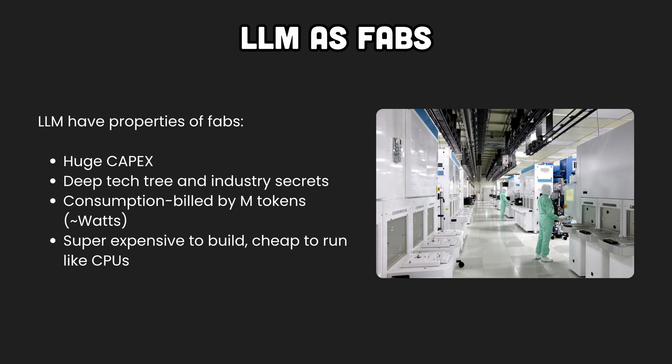The second comparison is LLMs as fabs — semiconductor manufacturing plants. Like fabs, they require huge CAPEX and involve a deep and rapidly growing tech tree with industrial secrets. Have you seen how OpenAI stopped being open and kept their techniques as secret as the Coca-Cola recipe? Similar to fabs, the output — the LLM model — is cheap to use comparatively to the crafting costs, just as CPUs are expensive to build but cheap to use.